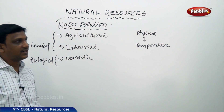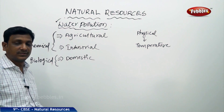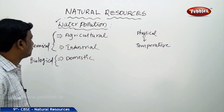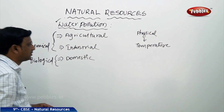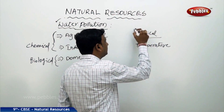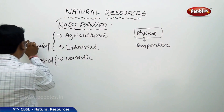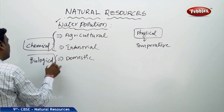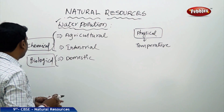So what are the unwanted things that are joining with water? What are the sources? We can categorize the sources into three: chemical, biological, and physical. These are the three points which are disturbing the natural setup of the water.